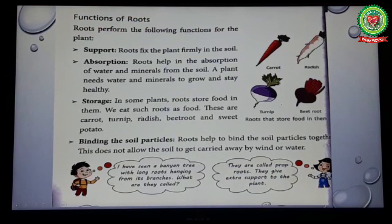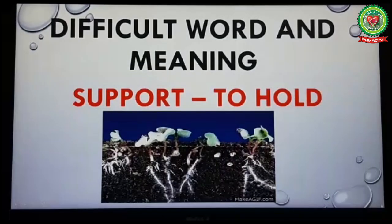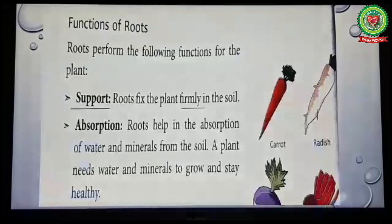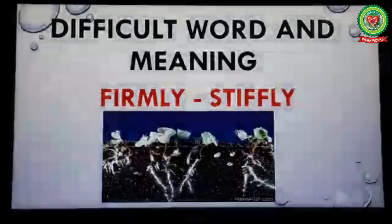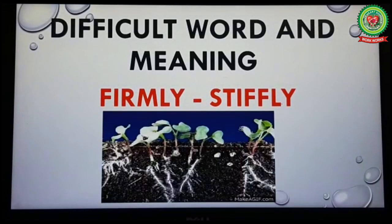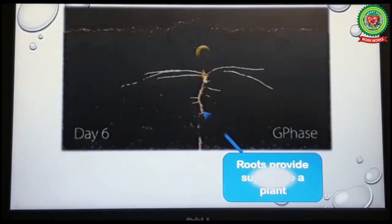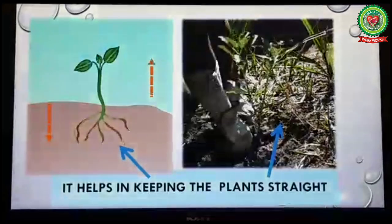Let's start reading functions of roots. Roots perform the following functions for the plant. Number one: Support. Underline the word 'support' and write its meaning: to hold. Roots fix the plant firmly in the soil. Underline the word 'firmly' and write its meaning: stiffly. Roots provide support to a plant and help in keeping the plant straight.